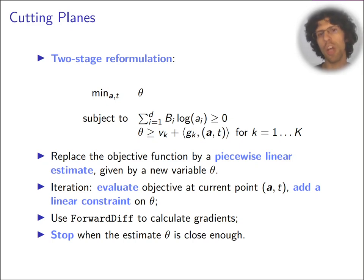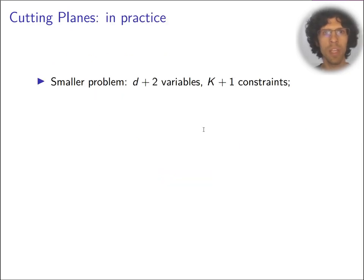Then we stop when the estimate theta that we have here using the inequalities is close enough to the objective that we can calculate. So this is a smaller problem. It has d plus two variables and k plus one constraints. So that's easier to solve. And this one we're going to send to ipopt.